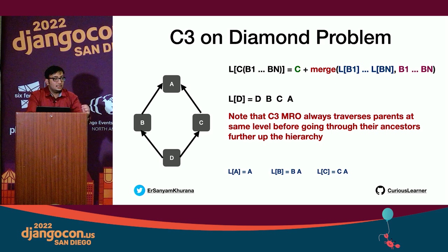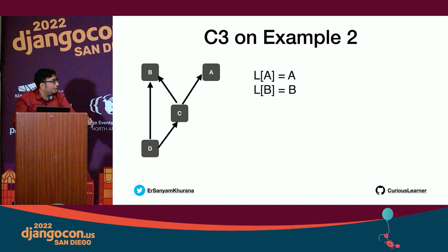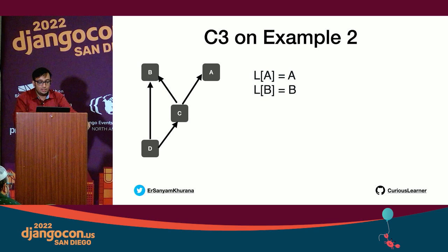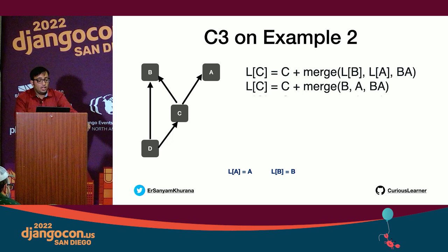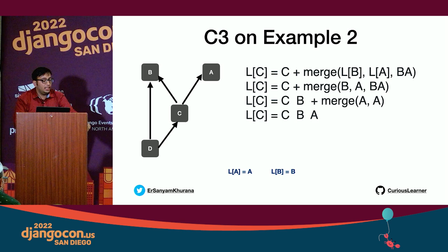Now let's run C3 on the non-monotonic example: D has parents B and C, and C has parents B and A. L(A) = A, L(B) = B. For L(C): C plus merge of L(B), L(A), and [B, A]. Replacing values gives merge of [B], [A], [B, A]. Taking B — it's not in the tail of any other list, so we take B out. We're left with [A] and [A], giving L(C) = C, B, A.